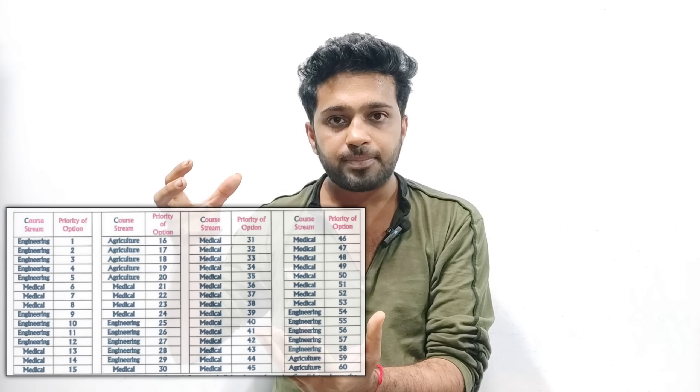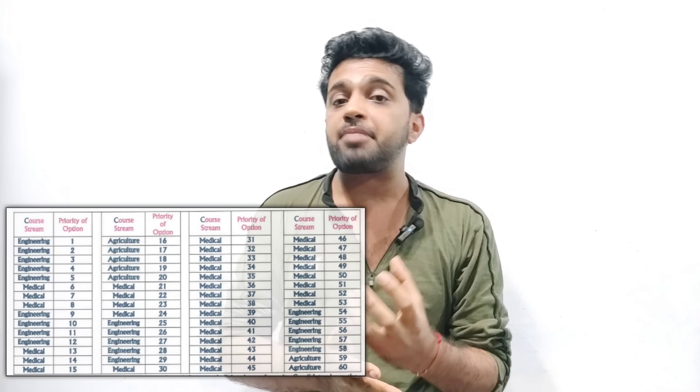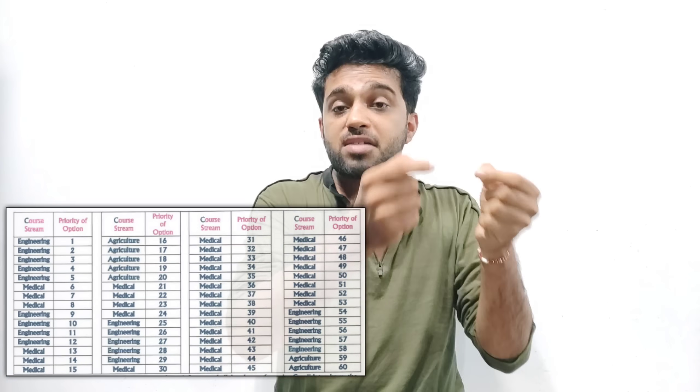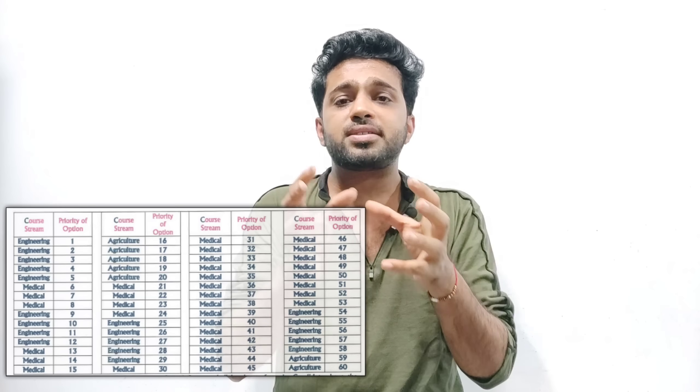First, medical colleges, then add any engineering colleges, add any medical colleges, add agriculture, add any engineering, add any veterinary colleges. Option entry interest will be added. If you have any other courses, you can set your priorities.